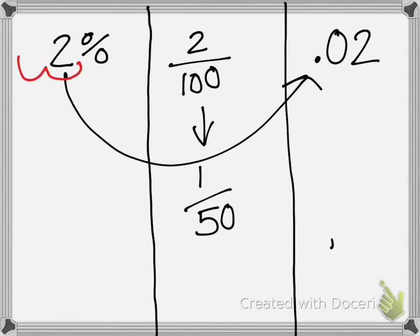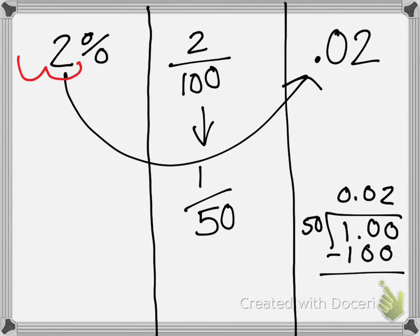Or we can do our long division, which looks like it'll take a while, but it really won't. We have 50 goes into 1, 0 times. Then we put our decimal. We follow it up. 50 goes into 10, 0 times. Another one. 50 goes into 100, 2 times. And that's 100. We get zero. And as we can see, same exact thing. So all of these mean the same thing.